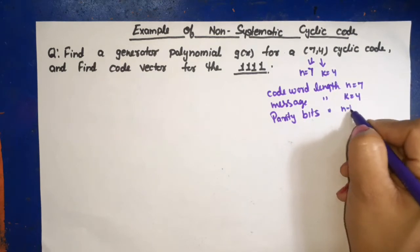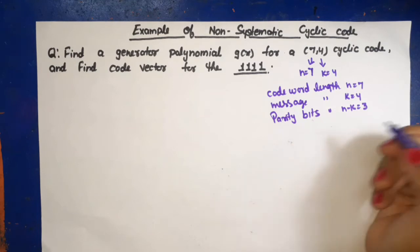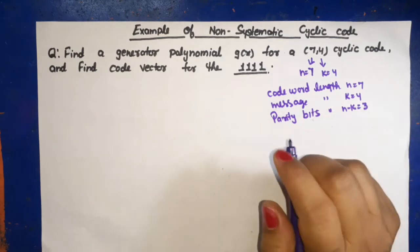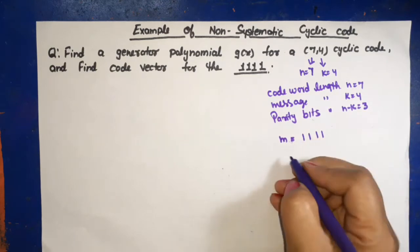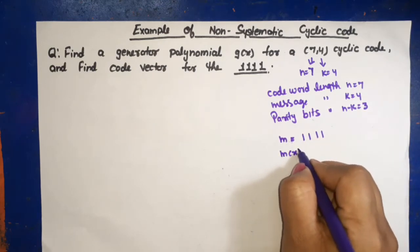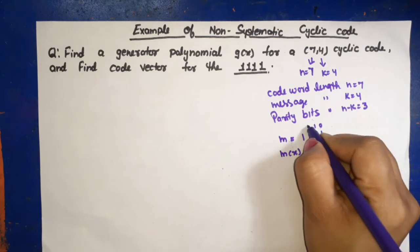Now message is given as m is equal to 1111. Take m(x), this will be 0, 1, 2, 3.